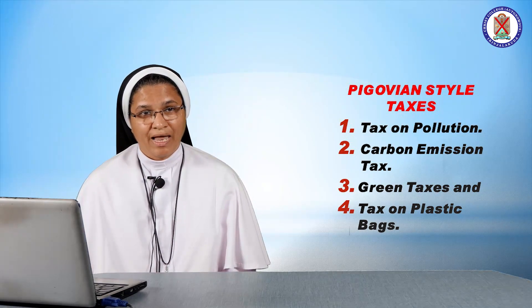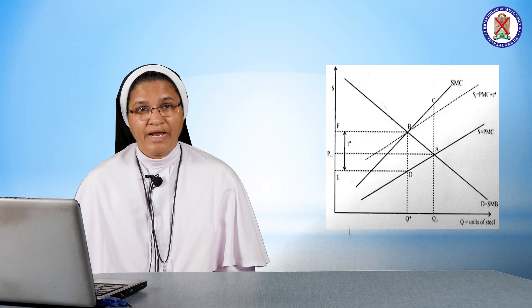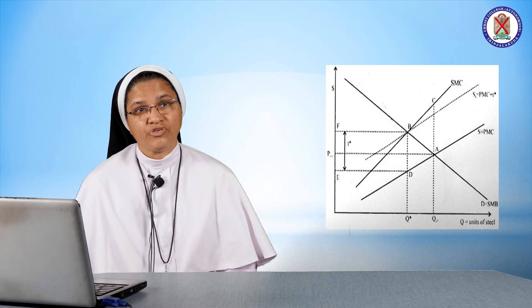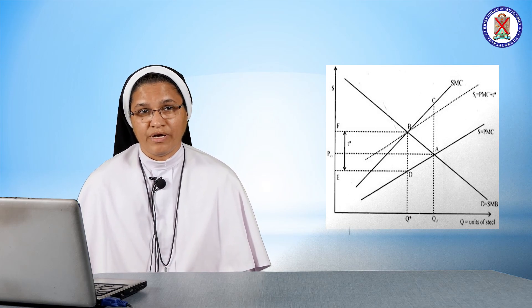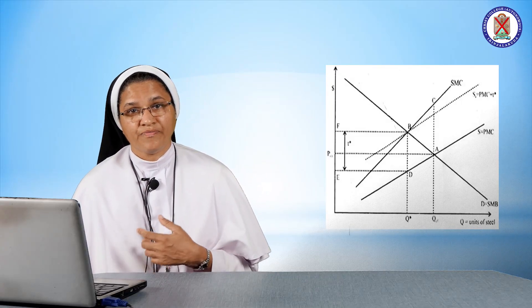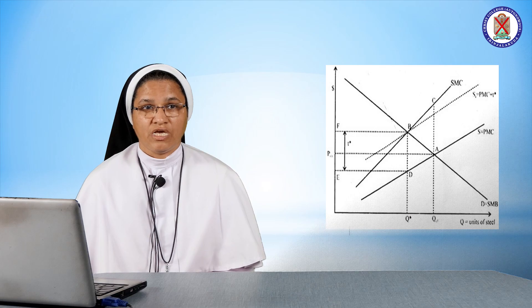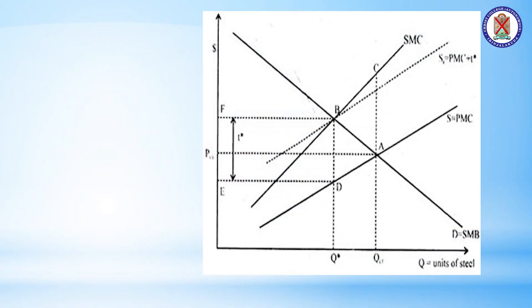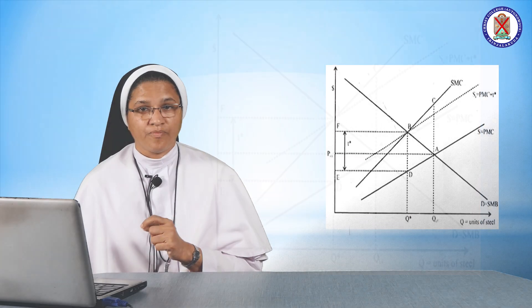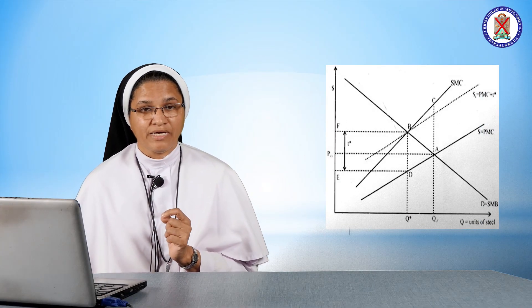Pigouvian tax can be explained with the help of a figure. The x-axis denotes the output of a competitive industry, say steel, which generates a negative externality — say smoke and dust that harms nearby homeowners. D is the demand curve, which reflects the marginal social benefit of producing steel, and S is the industry supply curve, that is the private marginal cost of producing steel. S+C is the sum of the private marginal cost to the producers and the marginal harms to the homeowners. The competitive equilibrium occurs at point A, where marginal cost equals marginal revenue, so the competitive price is P1 and the competitive output is Q1.